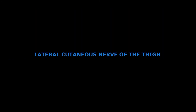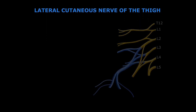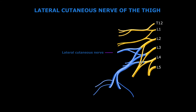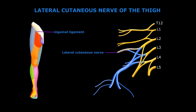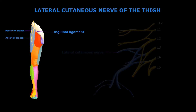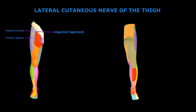The third nerve is the lateral cutaneous nerve of the thigh. It is a branch of the lumbar plexus and emerges behind the lateral end of the inguinal ligament, where it divides into anterior and posterior branches. It supplies the skin on the anterolateral side of the thigh and also an anterior part of the gluteal region.